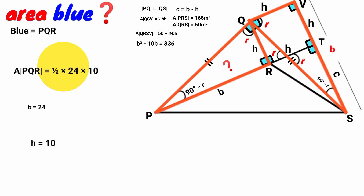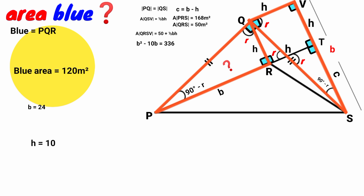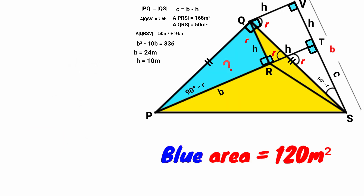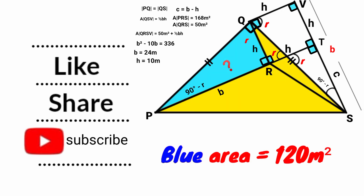Substituting into the area formula: ½ times 24 times 10 equals ½ times 24 is 12, and 12 times 10 is 120. So the area of triangle PQR equals 120. That is, the blue area equals 120 meters squared.